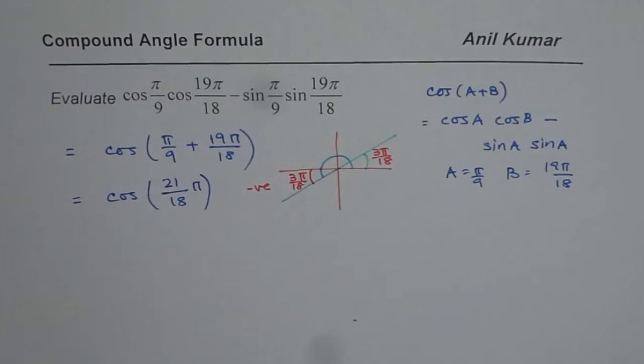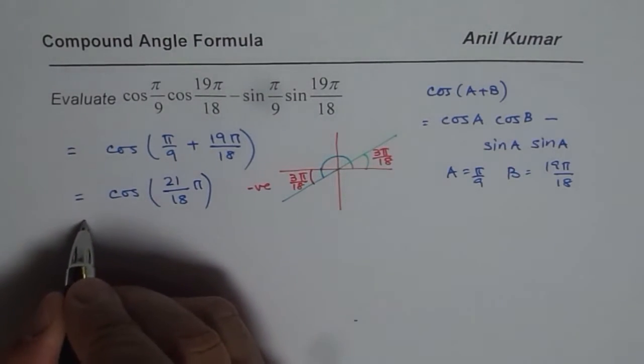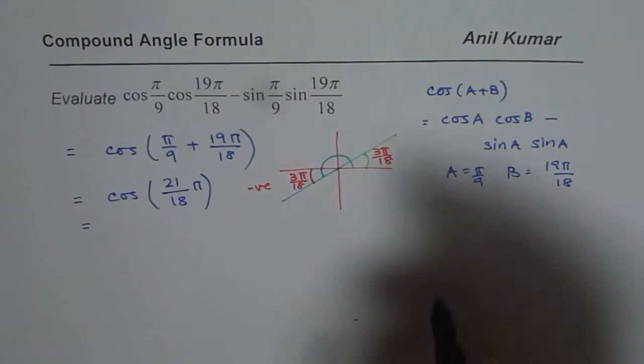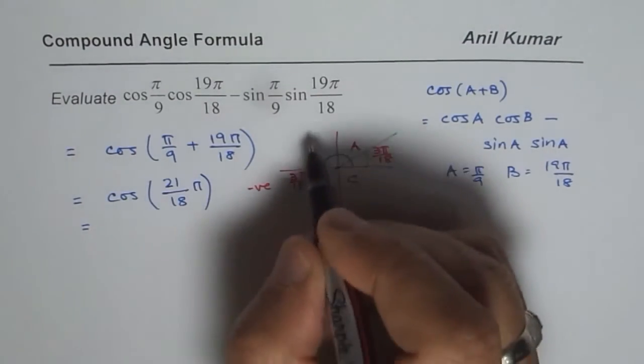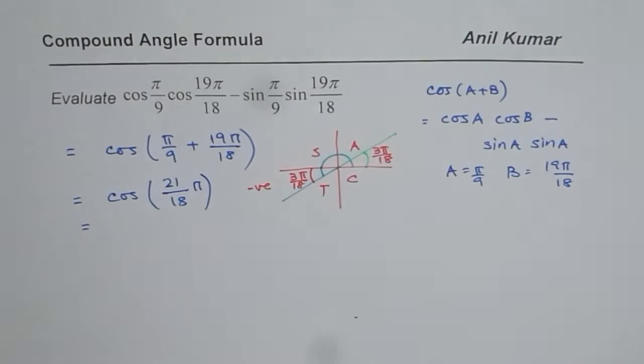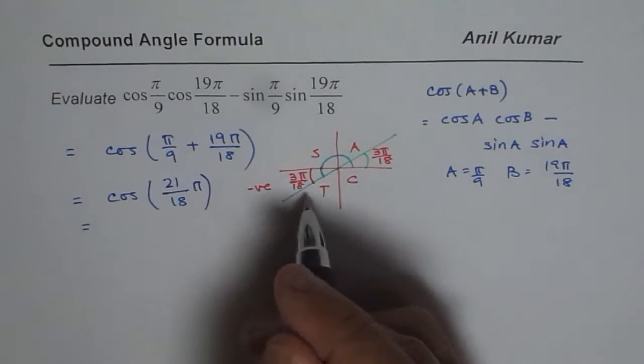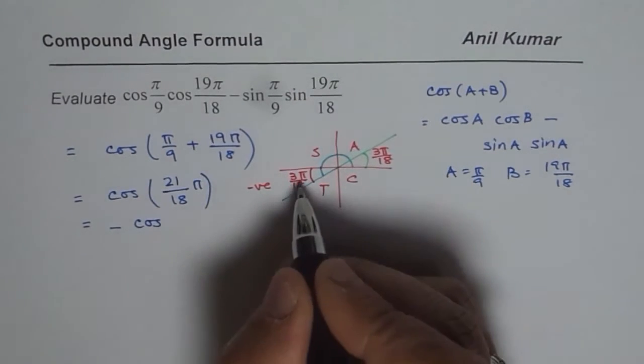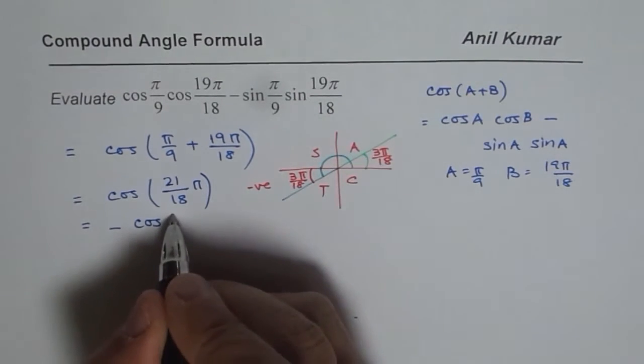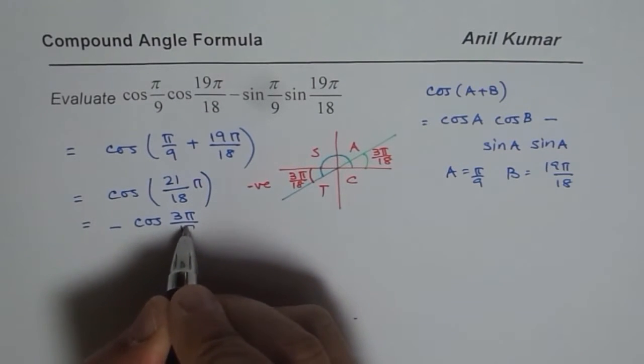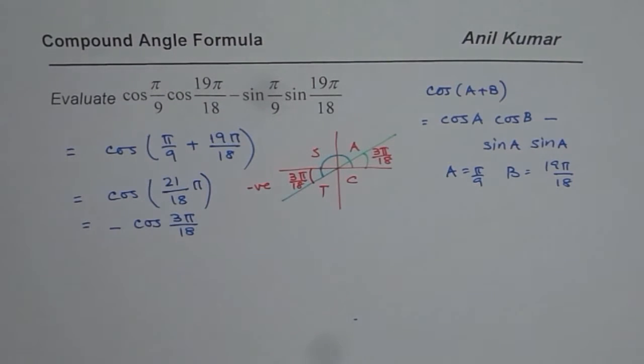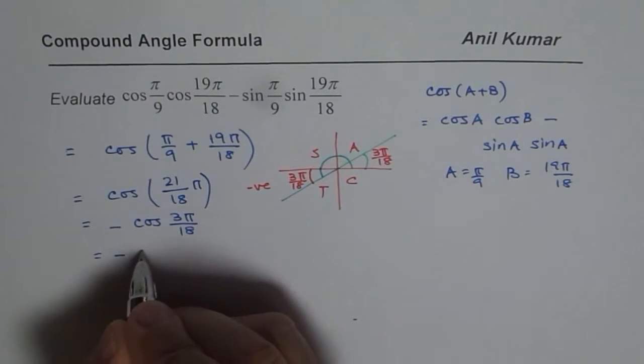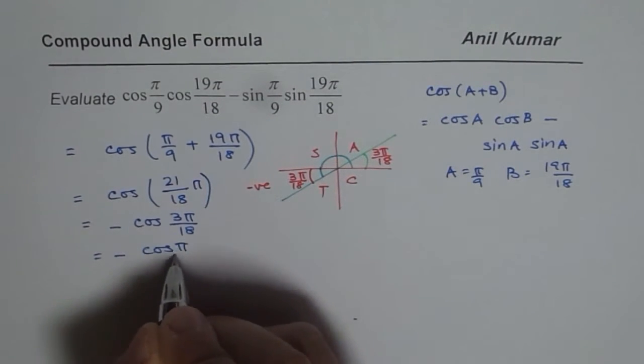And therefore, I can write my expression as, since in this coordinate cos is negative. Cos is positive in coordinate 4 and in 1. Here sin and tan are positive, respectively in 2 and 3. So negative of cos of acute angle 3π/18. So that is what we get. And you can simplify 3π/18 to get minus cos of π/6.